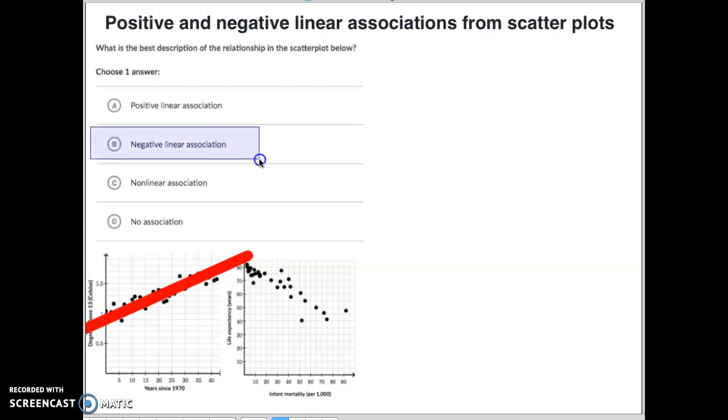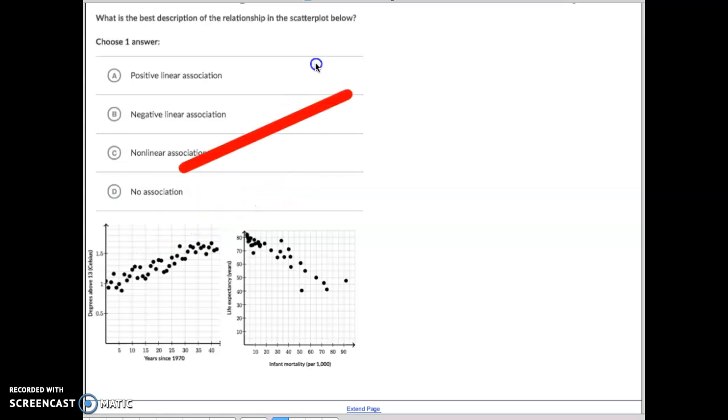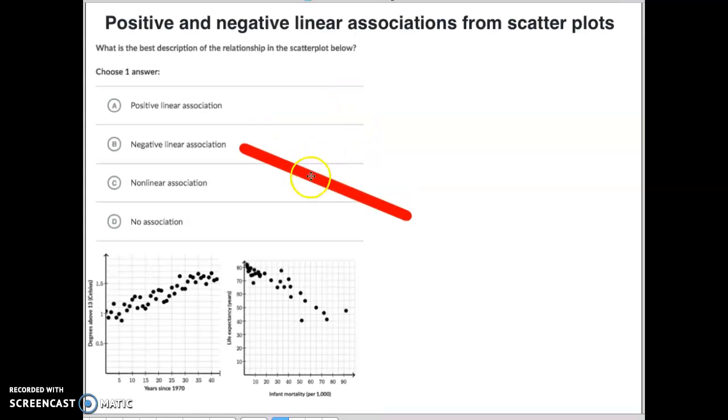So if you think about a negative association, that means that your line is actually going down. Something similar to that right there. So anytime a line is going down as you work from left to right, it has a negative linear association. So you can kind of notice on this one, for the most part, is going down as we work on that.